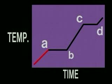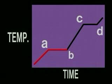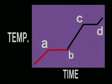The temperature remains constant while melting occurs. At B, all the solid has melted, and the temperature again increases as the liquid is heated. At C, the liquid boils.